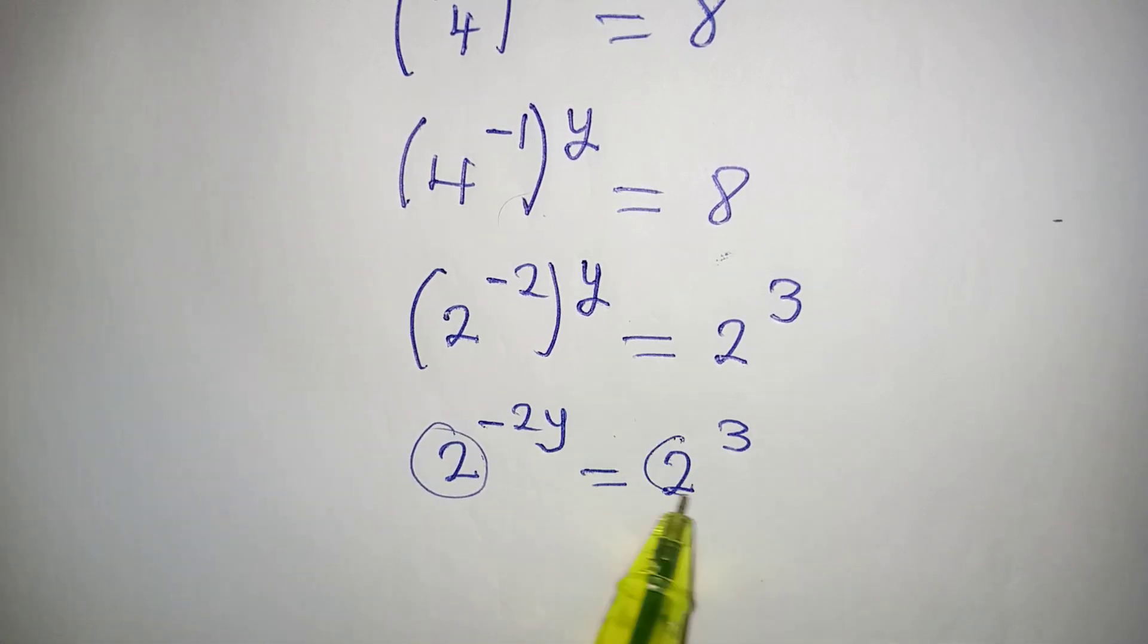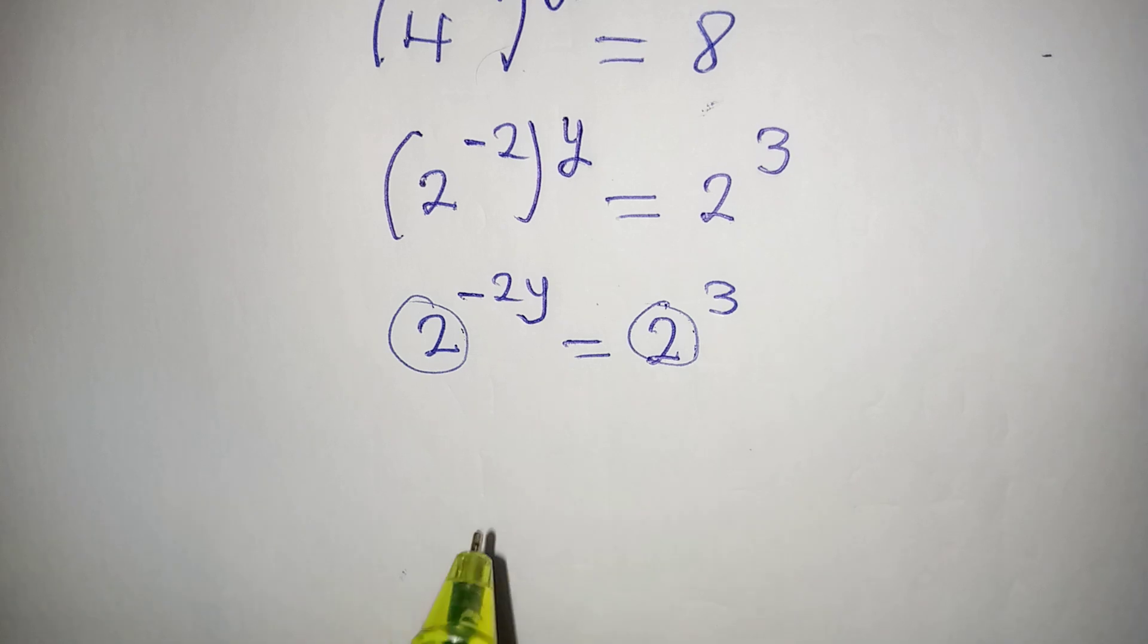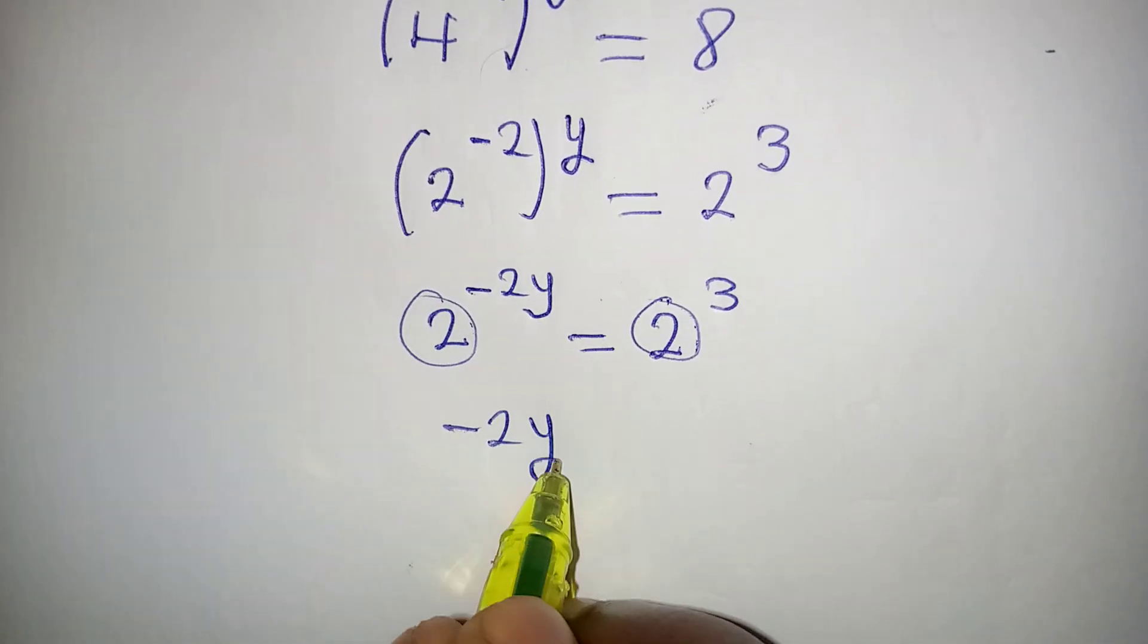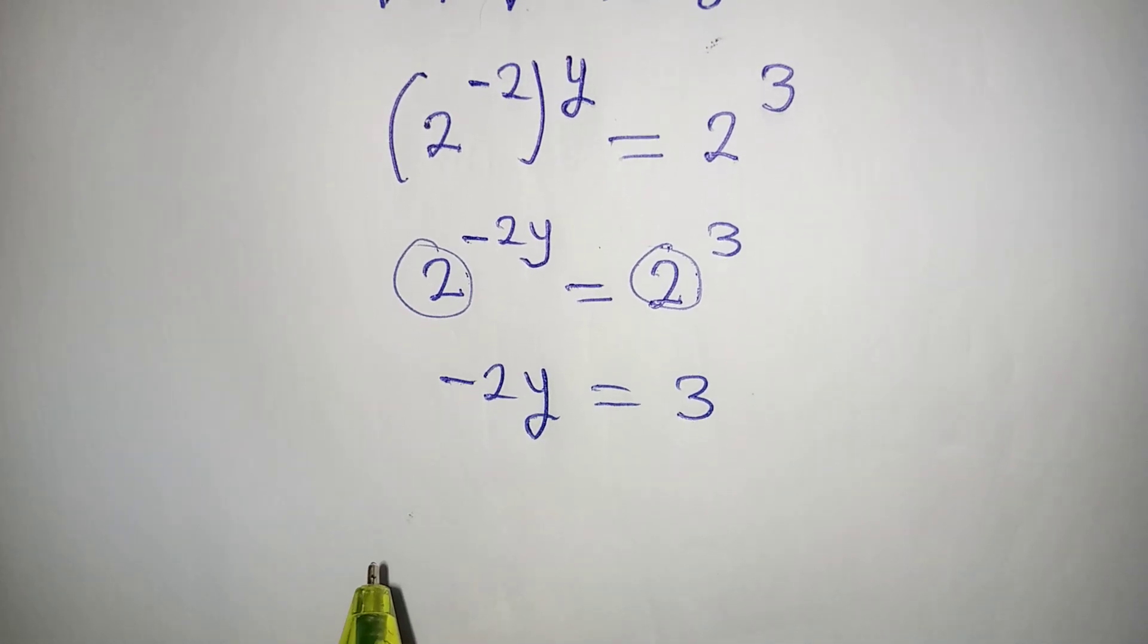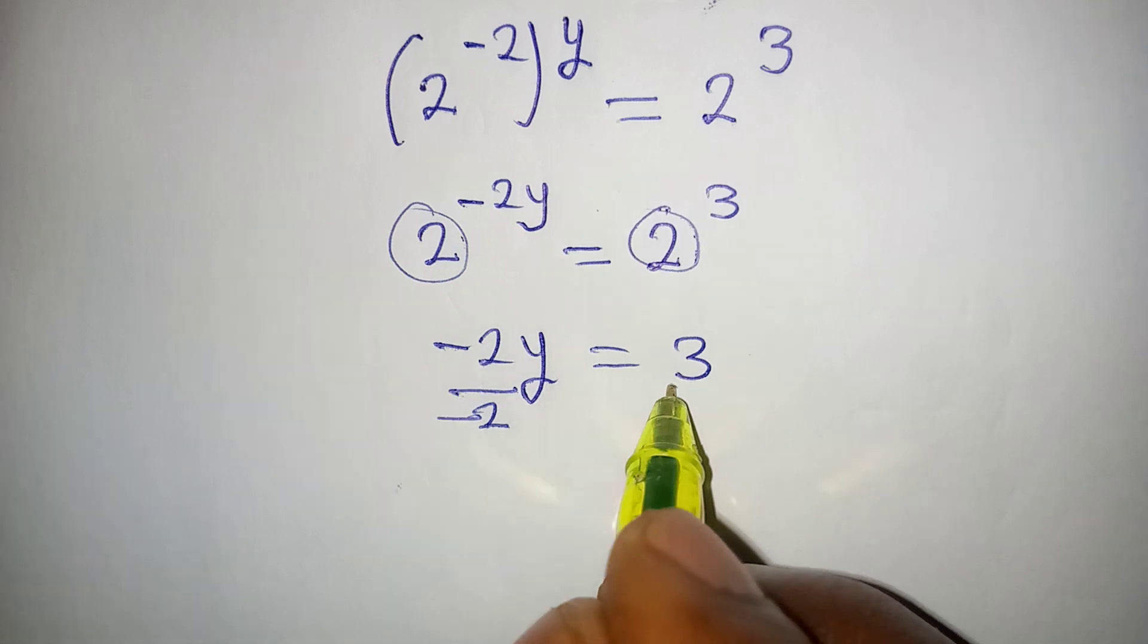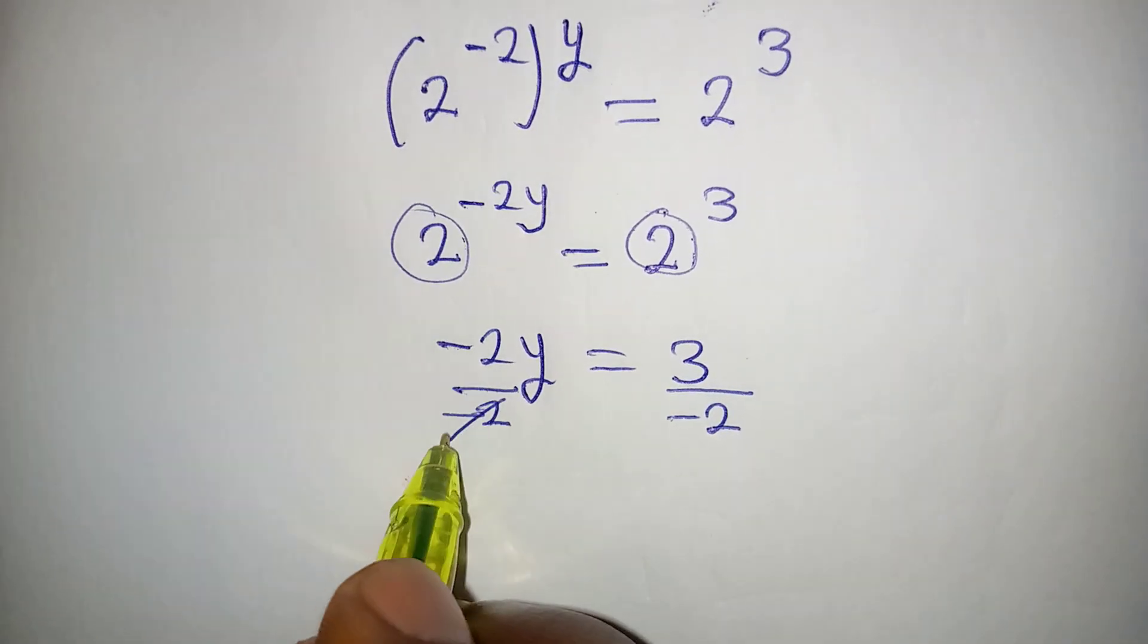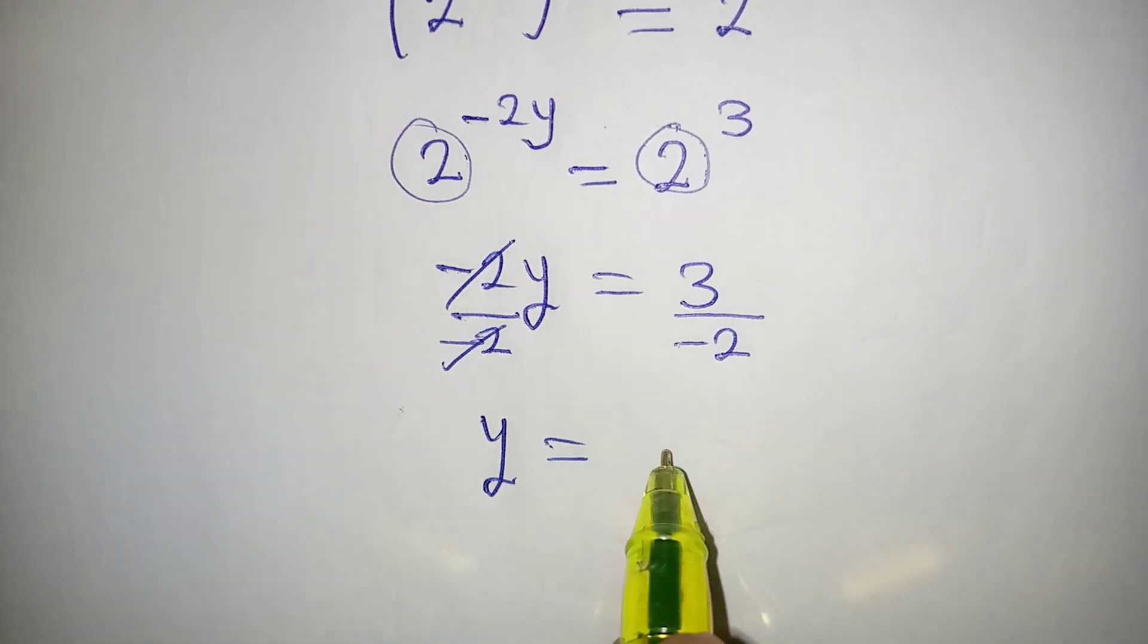Now the bases are the same, we're going to let go of them and work with the powers. Negative 2y now will be equal to 3, and to get the value of y, we divide both sides by minus 2, so y will be equal to 3 over minus 2.